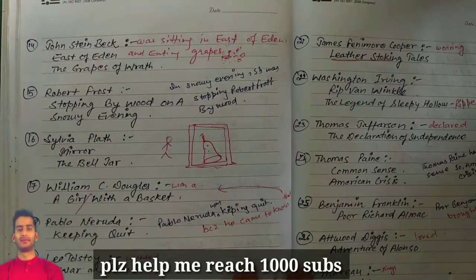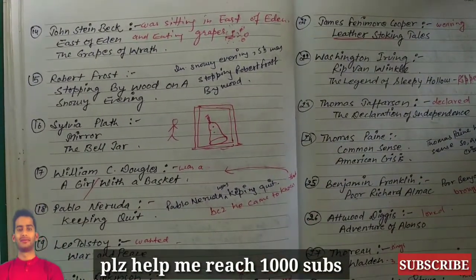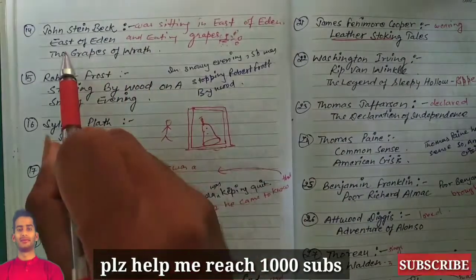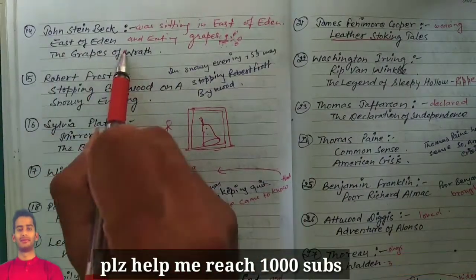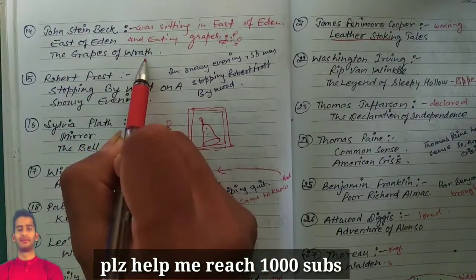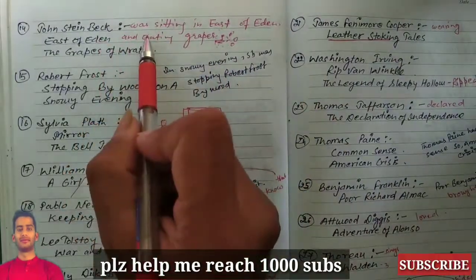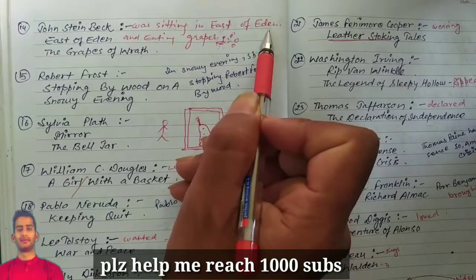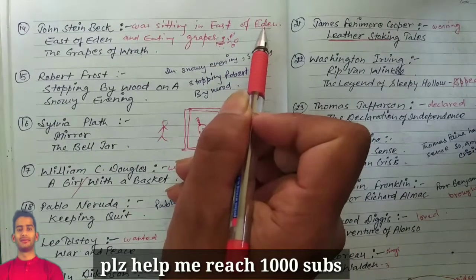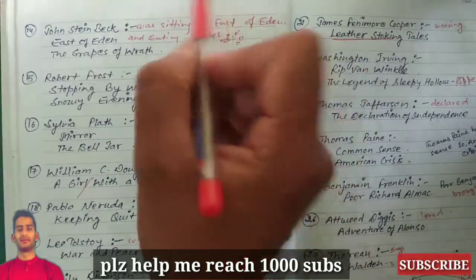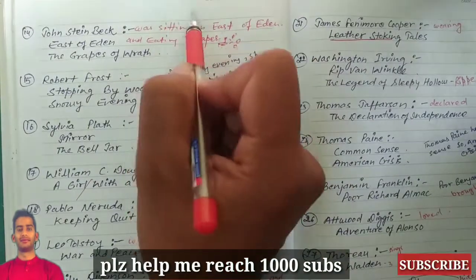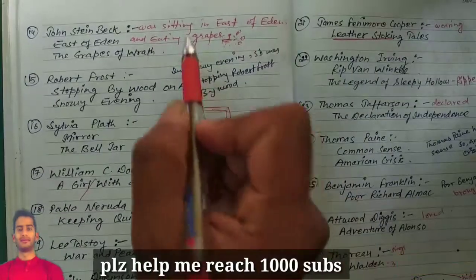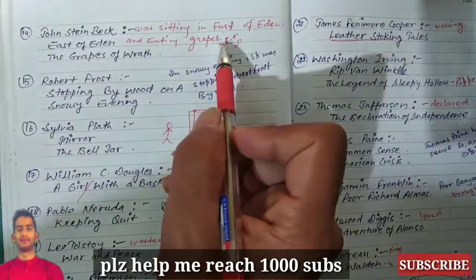So first writer for today is John Steinbeck and his works are East of Eden and The Grapes of Wrath. Here is the shortcut: John Steinbeck was sitting in the East of Eden, you know Eden Garden, so I was picturizing Eden Garden and John Steinbeck is sitting here and eating grapes.